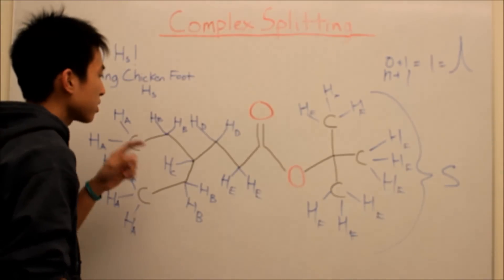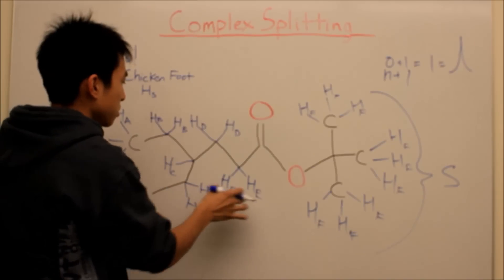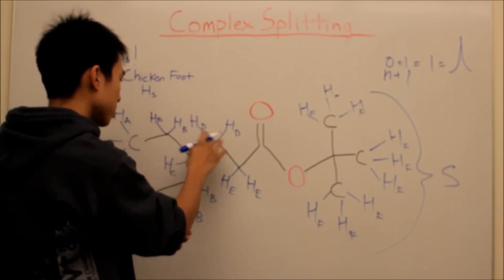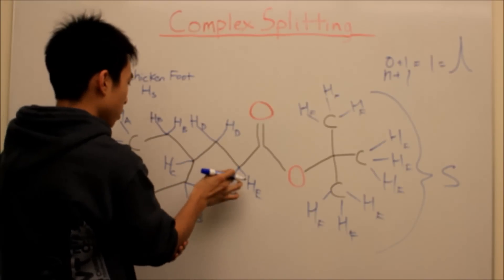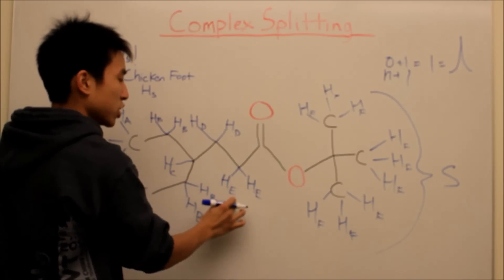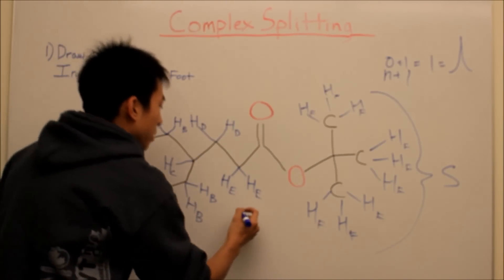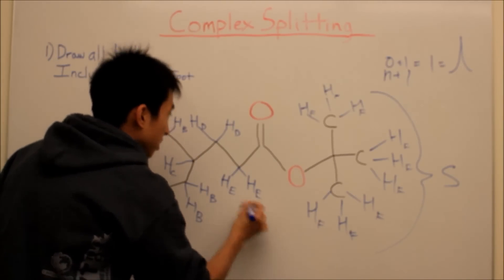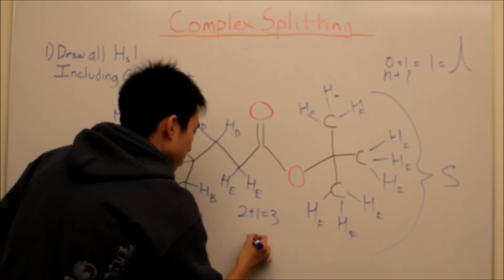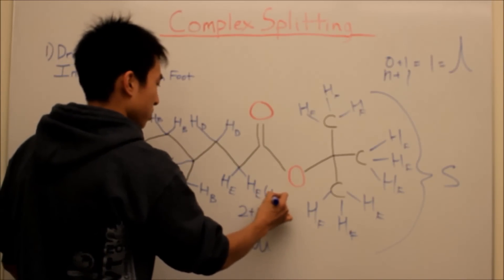Next, let's do the HE hydrogens. There are two of them, and let's see their neighbors. One bond, two bonds, three bonds — so those are within range. One bond, two bonds, three bonds, four bonds — way too far. So HE is just being split by HD and HD. Using the n plus 1 rule, it's still simple splitting: two plus one equals three, so that's going to be a triplet.